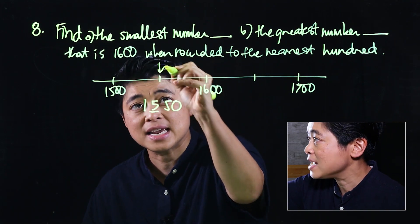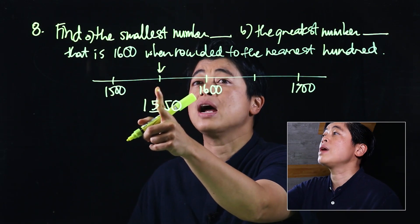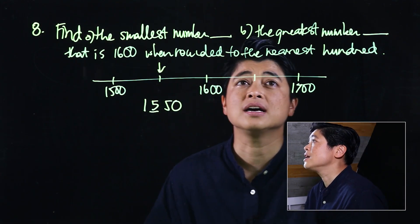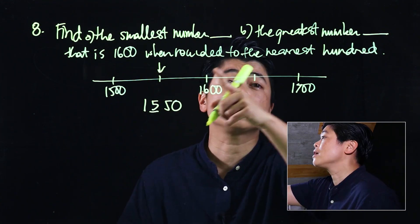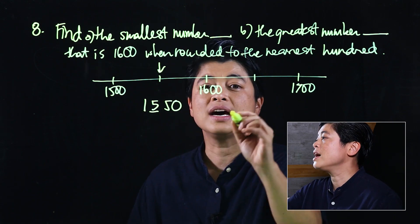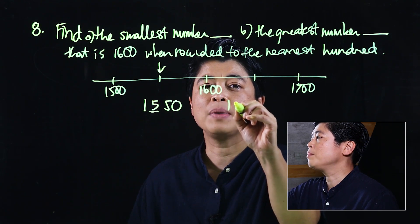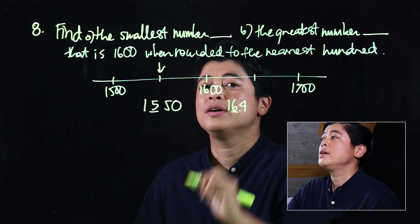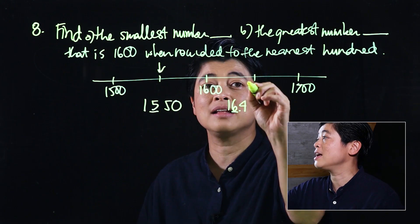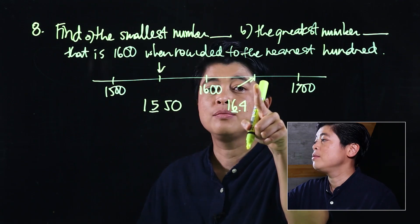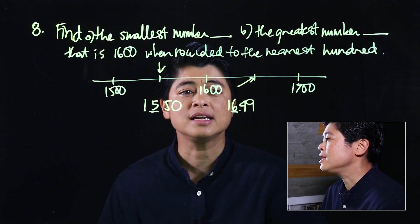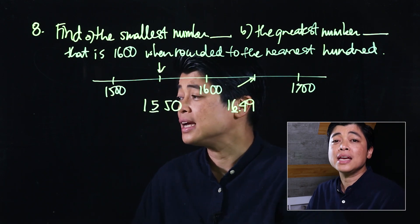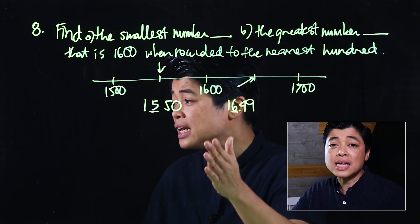That's the smallest number that when rounded to the nearest hundred gives 1600. When it wants the greatest number, that means it's on the right side of 1600. We know it has to be a one followed by a six, and then the digit after the six has to be a four so it stays the same. Since it wants the greatest, it has to be right before the midpoint, which means the answer is 1649. This is a bit more challenging — it's the one where kids really need to draw it out visually.